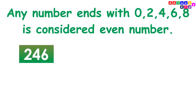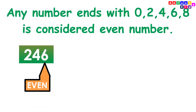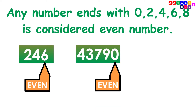246 is an even number because the last digit of the number is 6, and 6 is an even number. 43790 is an even number because the last digit of the number is 0, and 0 is an even number.